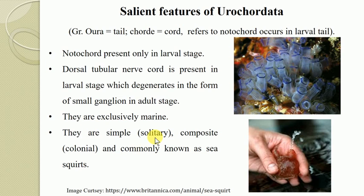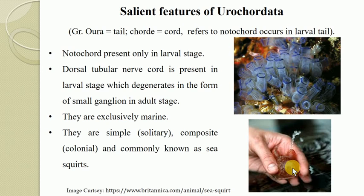The next characteristic feature: they are simple, solitary, composite or colonial, and are commonly known as sea squirts. They are called sea squirts because they have a tendency to squirt out water when they are removed from their watery home, or when disturbed — they suddenly contract their body and emit the inner content with force through their aperture.